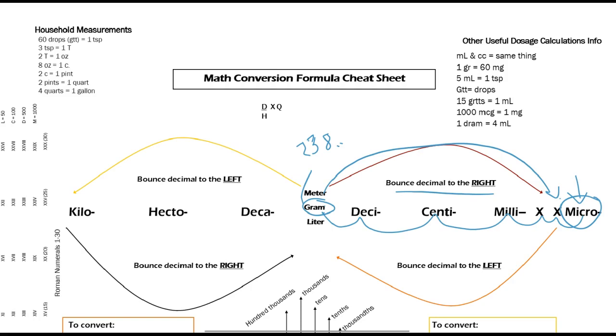So 238, sorry I'm writing with a stylus so it's kind of sloppy, and the decimal is already here, so we're going to go one, two, three, four, five, six. And basically all you do is drop in zeros. So then the decimal moves from here six spots over and it comes in right here.